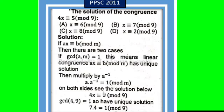4x ≡ 5(mod 9). gcd(4,9) = 1, so we have unique solution.